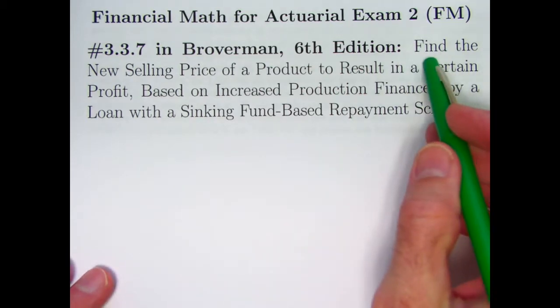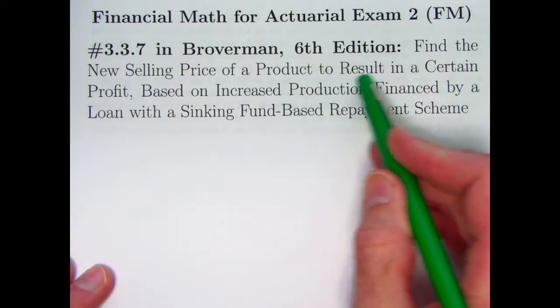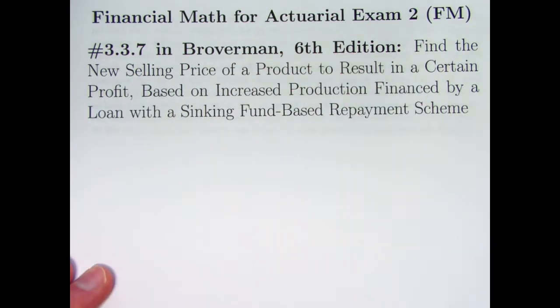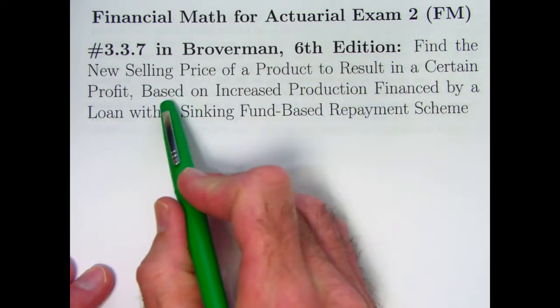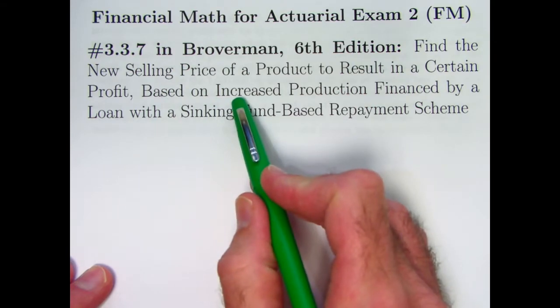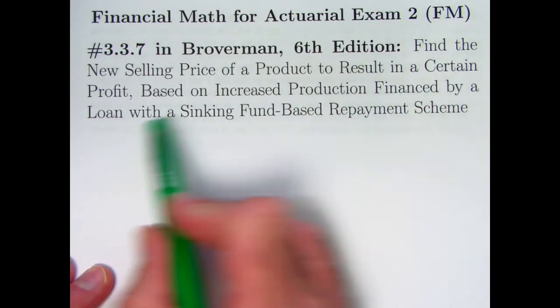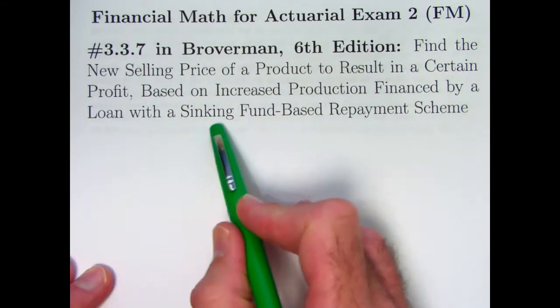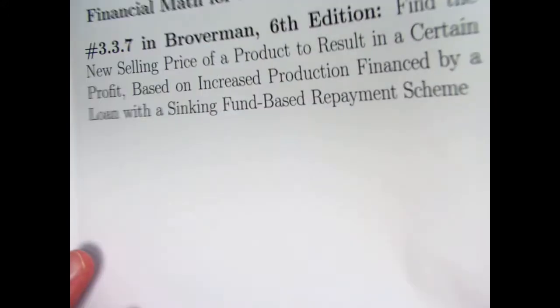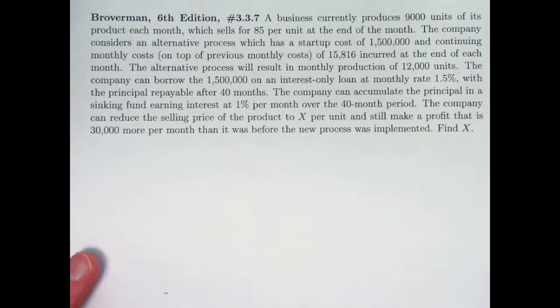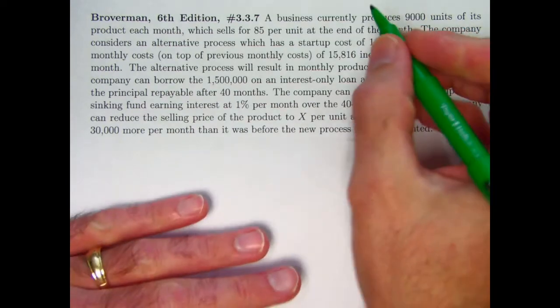The description says, find a new selling price of a product that's going to result in a certain profit, related to an old profit actually, that's going to be based on a new production method, an increased production financed by a loan with a sinking fund-based repayment scheme. So a long description, here we go, long problem statement, break it down piece by piece.